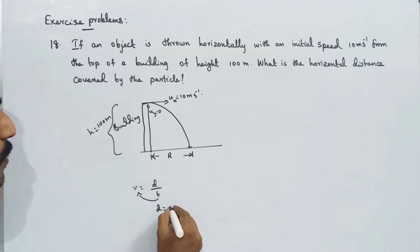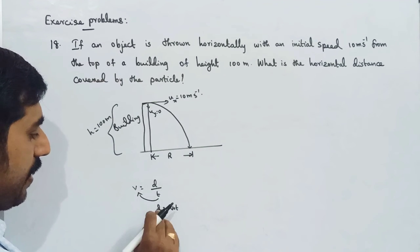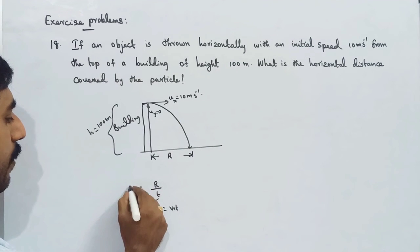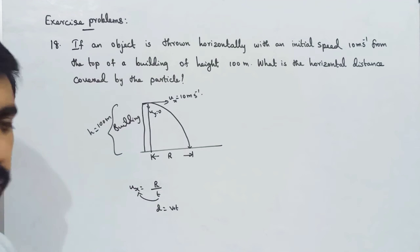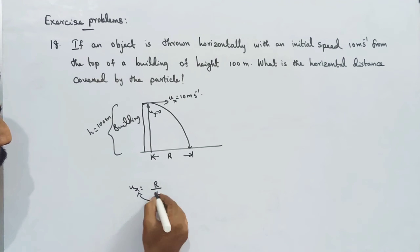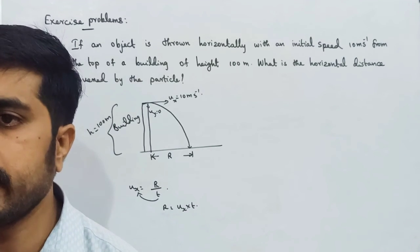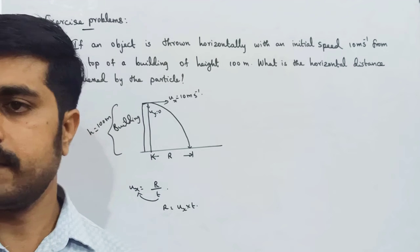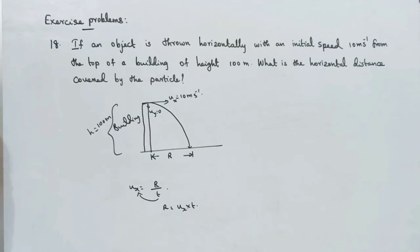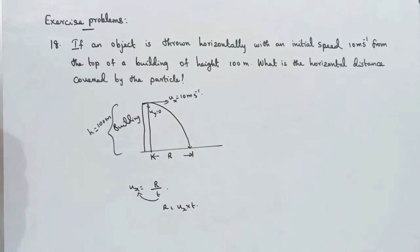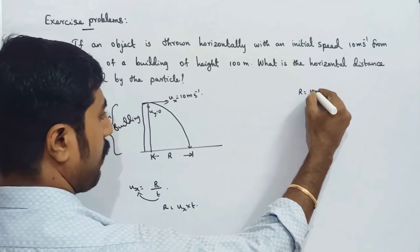Distance is equal to speed into time. The horizontal distance R equals horizontal speed Ux multiplied by time T. So R is equal to Ux into T.